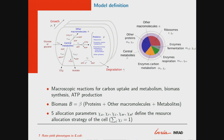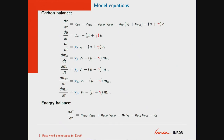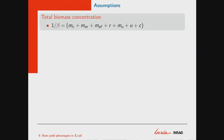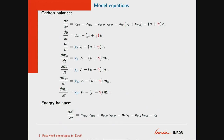For instance, in E. coli when we calibrate the model, the central metabolites are around 3% of the biomass, proteins around 70%, and the rest is other macromolecules. So we have an equation for carbon balance.